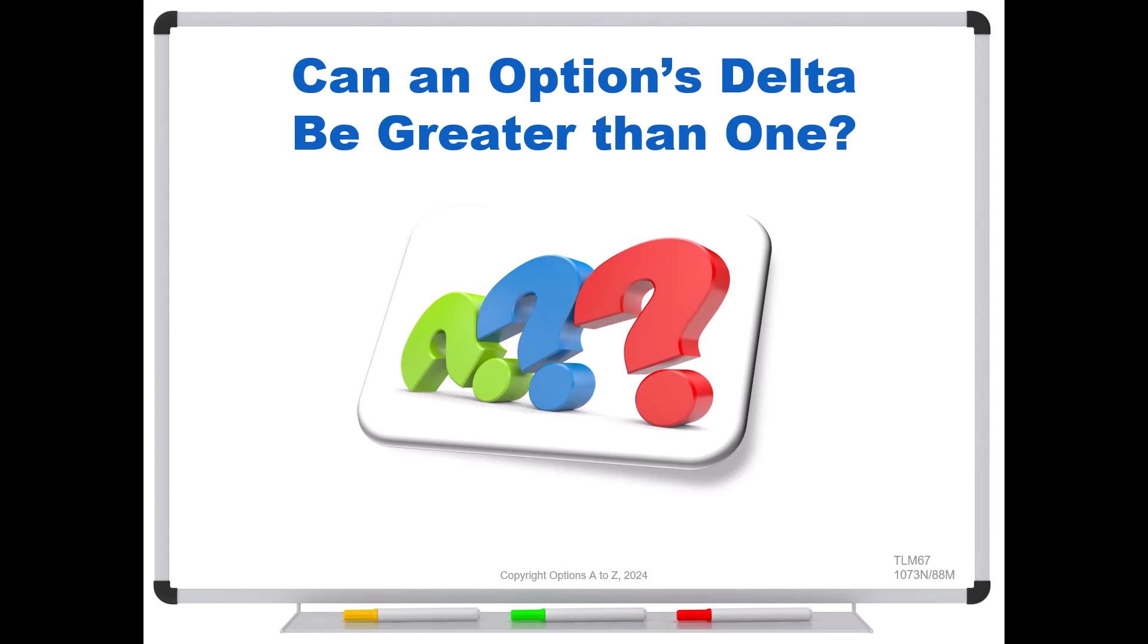Hey, good morning options traders. Well, I was just speaking with a trader the other day, and he had a really good question, which I thought the rest of the group could benefit from. He was asking, can an options delta be greater than one?